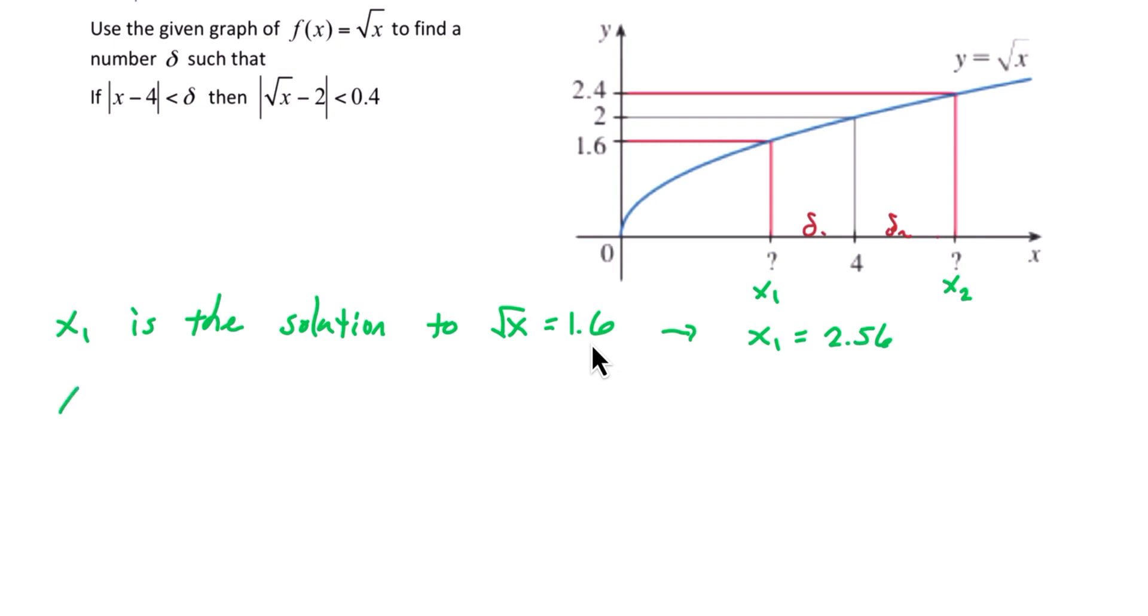To find x2, we'll use a similar process. x2 is the solution to the square root of x equals 2.4. Again, when we are looking at x2, the y value is 2.4. So to solve, square both sides, and we get x2 is 5.76.